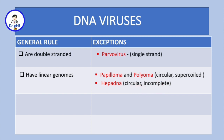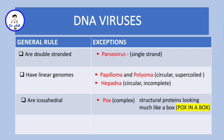Most DNA viruses have an icosahedral symmetry, except the pox virus, which is actually complex. Its structural proteins make it look like a box, so you can remember: pox in a box.